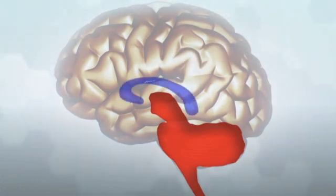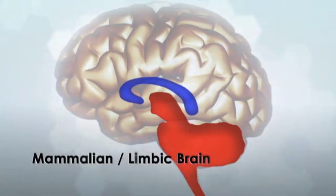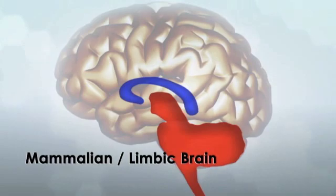The second area deals with memory, emotions, bonding and reactions like the fight or flight response and is known as the mammalian or limbic brain.